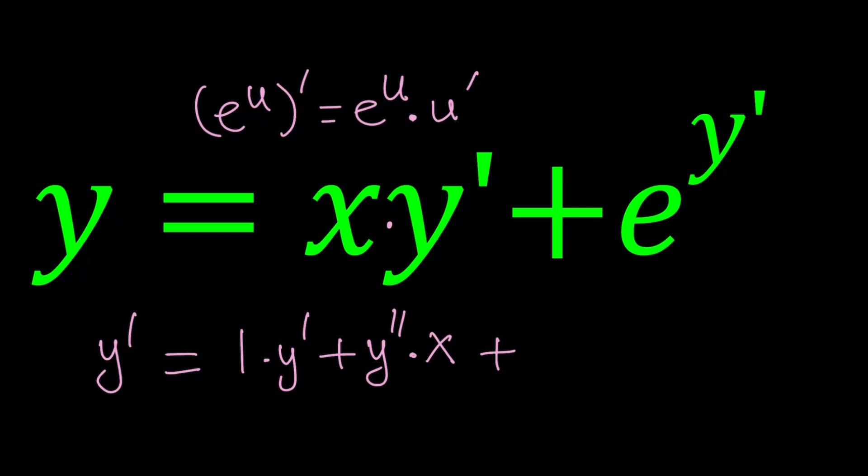So it's going to be e to the power y prime multiplied by the derivative of the exponent, which is y double prime. Make sense? So we differentiated both sides with respect to x.